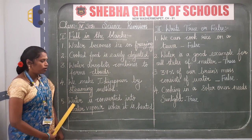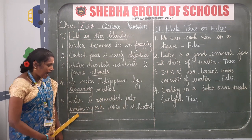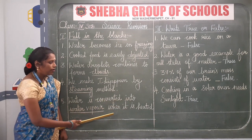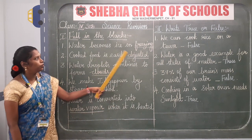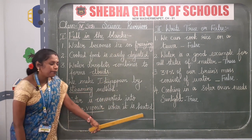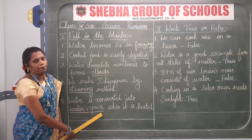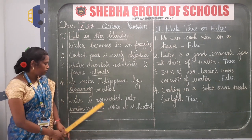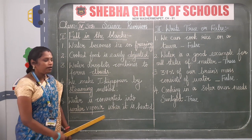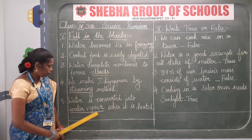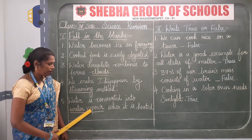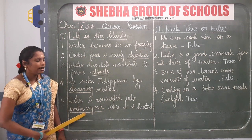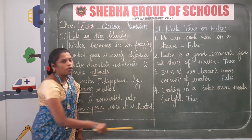Don't forget that. Fifth one: water is converted into blank when it is heated. When you freeze water it becomes ice; when you heat water it becomes water vapor. Water is converted into water vapor when it is heated. W-A-T-E-R V-A-P-O-U-R. Underline the answer and draw a line using scale and pencil.